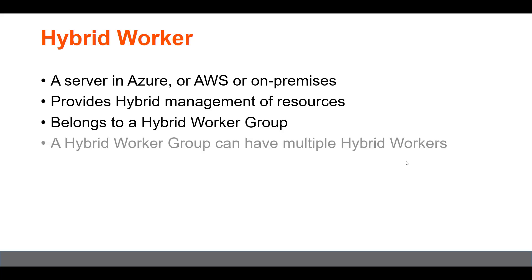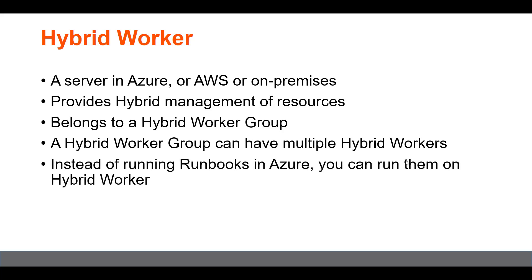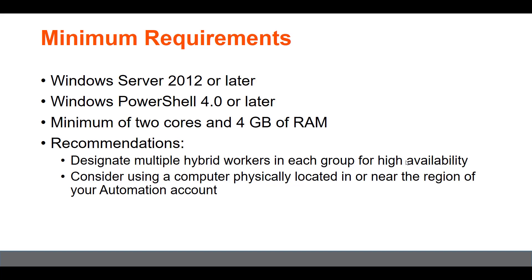A hybrid worker always belongs to a hybrid worker group. A hybrid worker group can have multiple hybrid workers, and each hybrid worker will be an individual server. Instead of running runbooks in Azure, you can specify them to run on a hybrid worker. You specify that a runbook will run in a particular hybrid worker group, and the underlying hybrid worker is automatically decided by the automation engine.